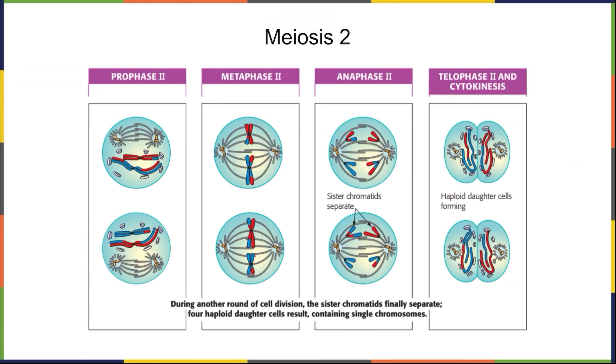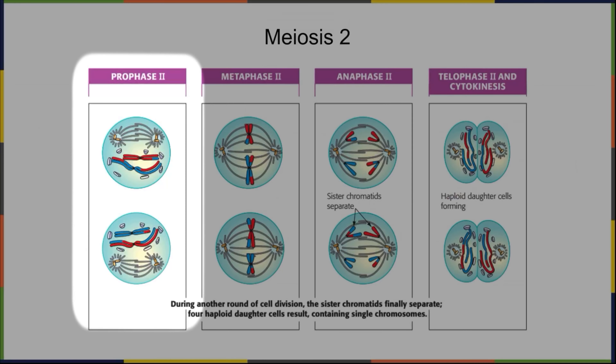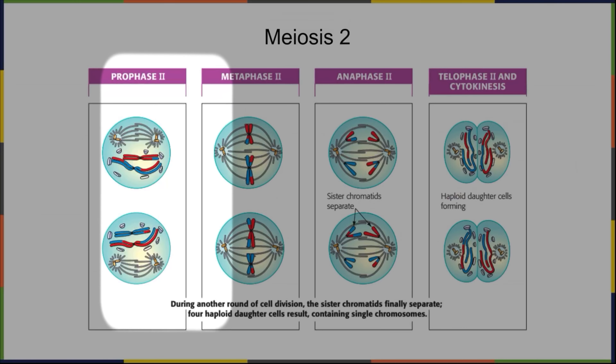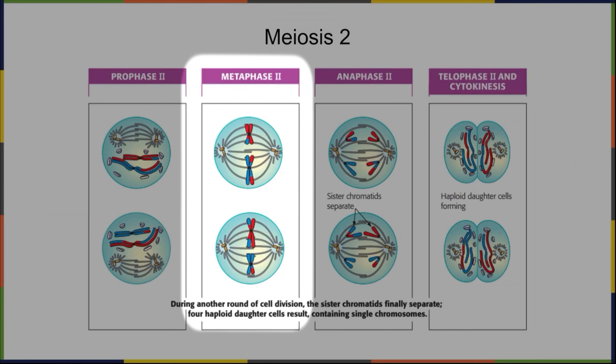Now let's look at meiosis two, which will look a lot like mitosis. In prophase two, the cells are already condensed so there's no packing stage, but the centrosomes move to each side of the cell and spindle fibers start to develop. In metaphase two, the chromosomes line up again, but this time they line up so that each copy will be split and the genetic information will be divided up within each cell very evenly.